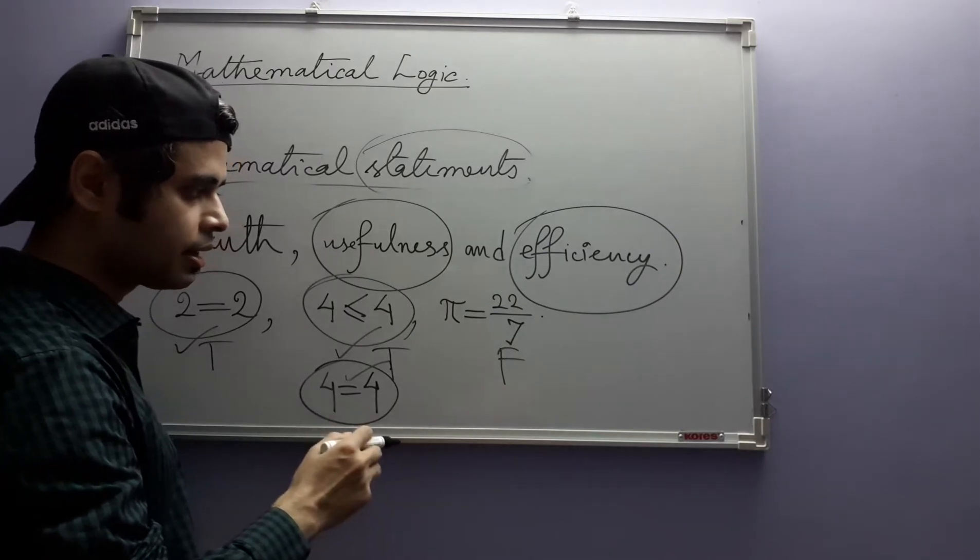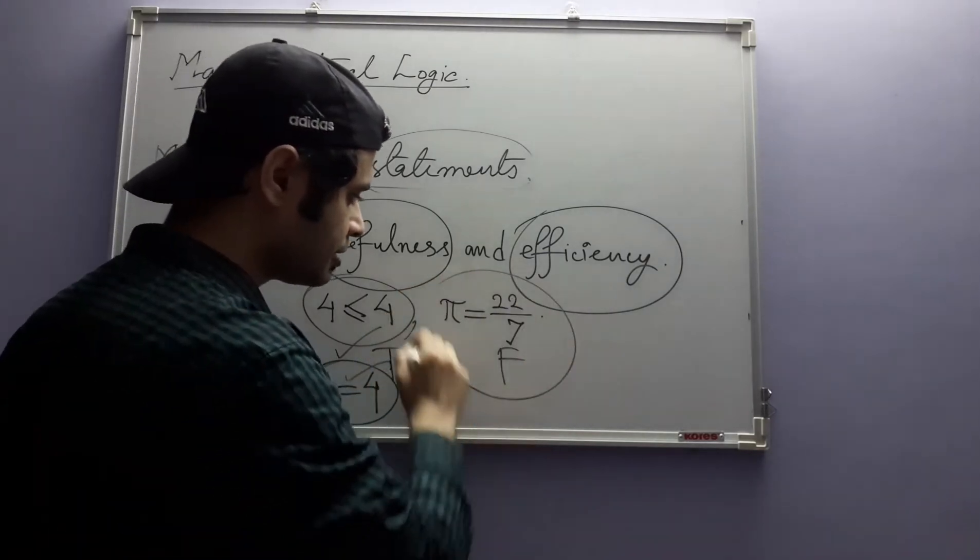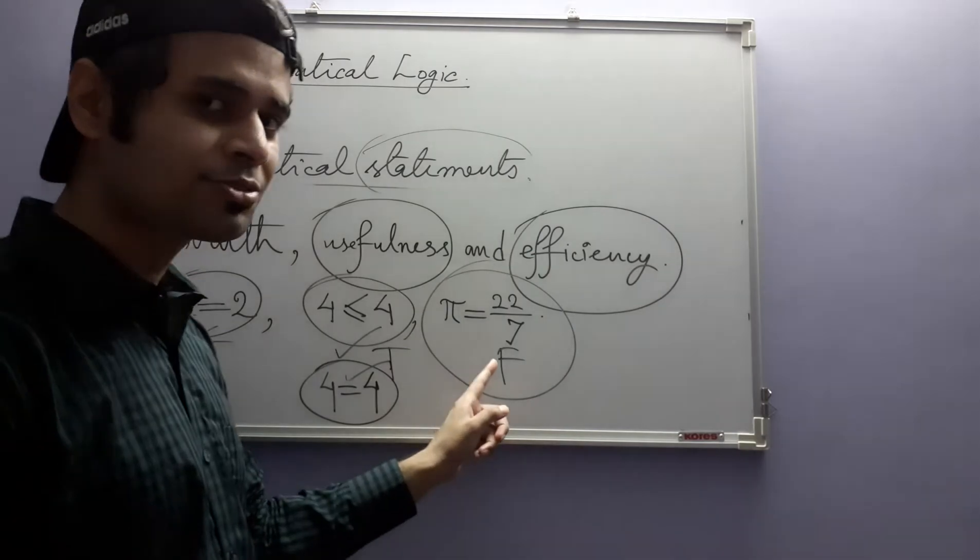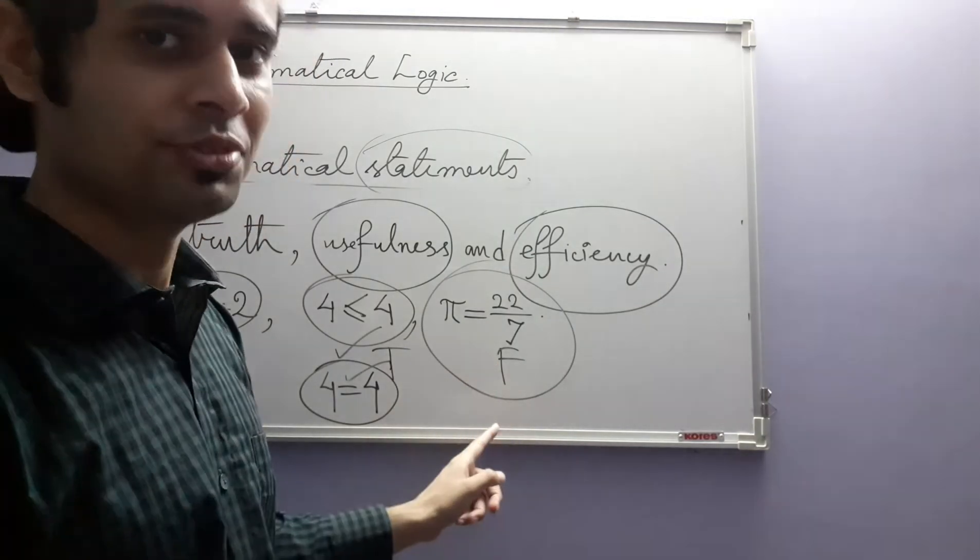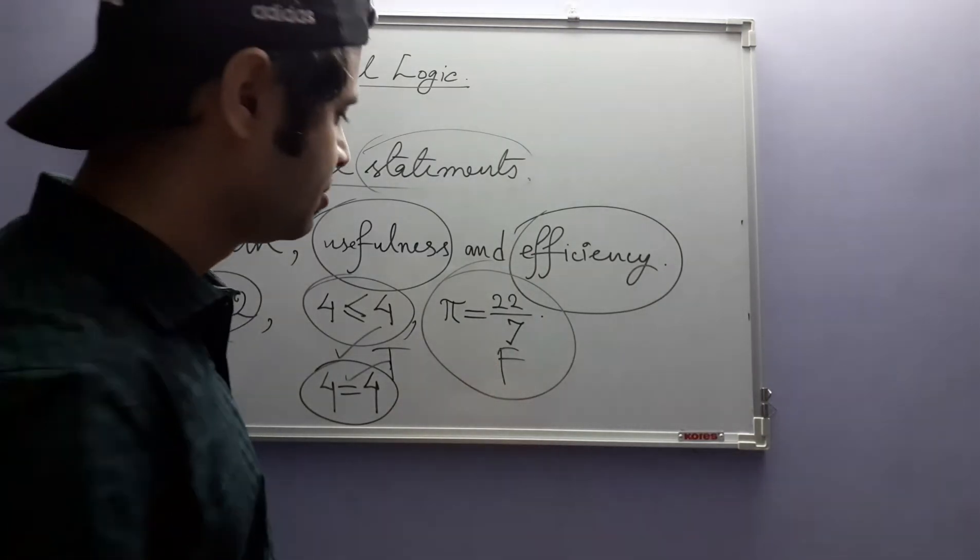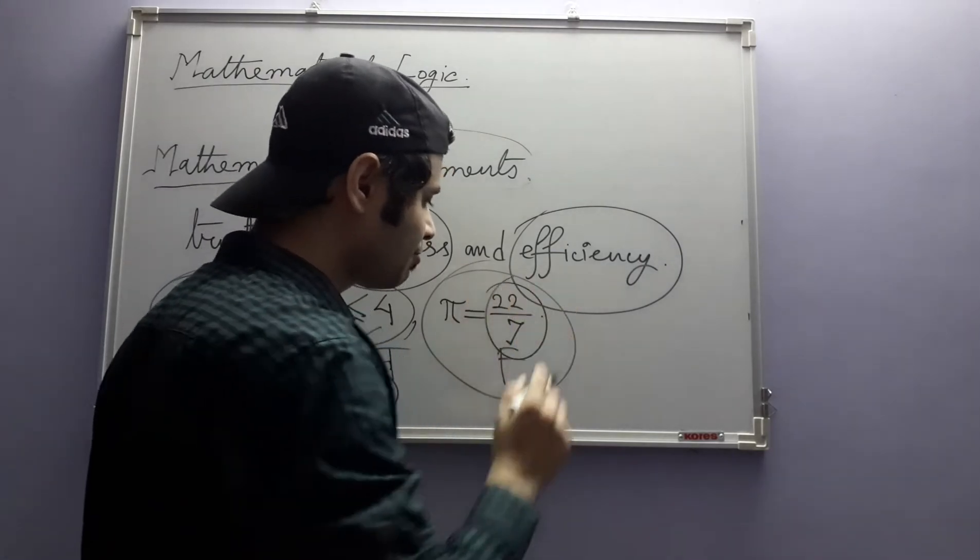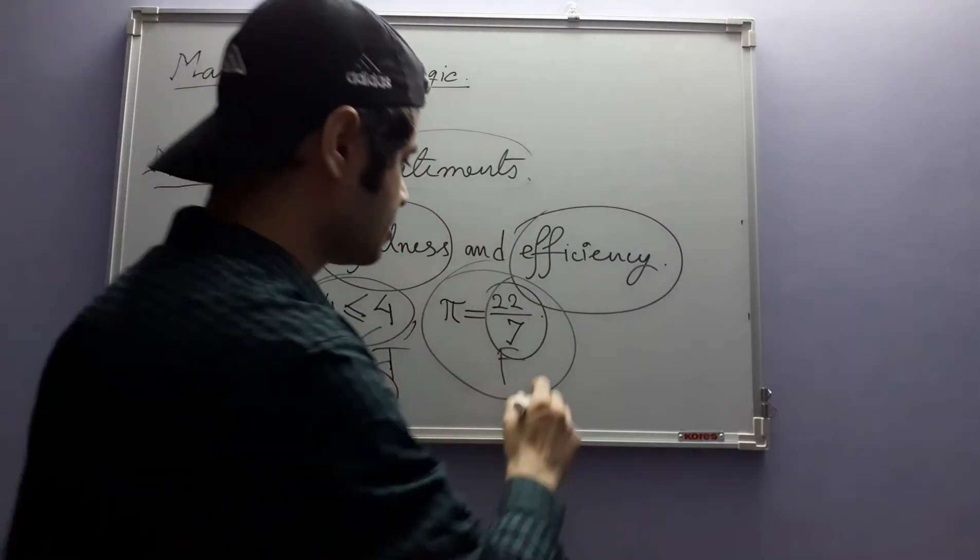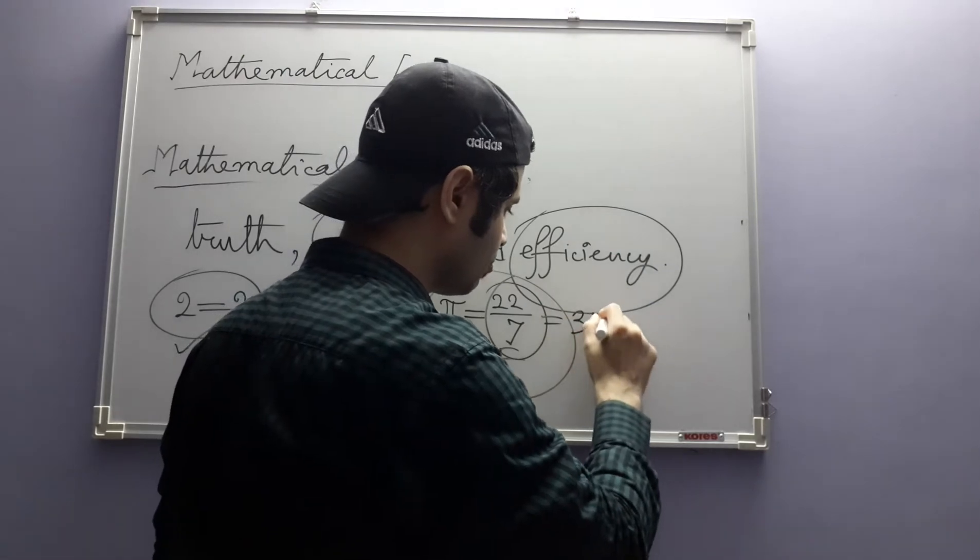The curious thing about the third statement is that although it is false, it is useful. How? Because this is a first approximation to pi, this is equal to 3.14.